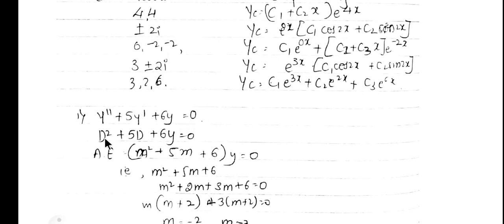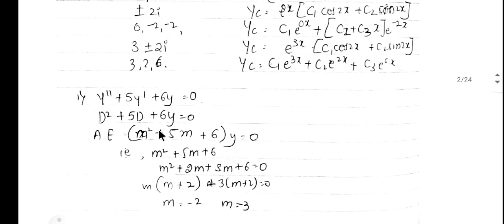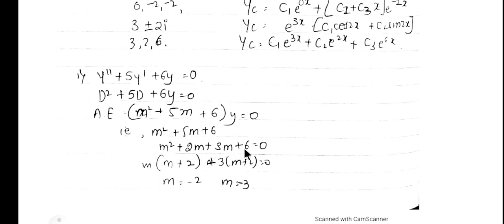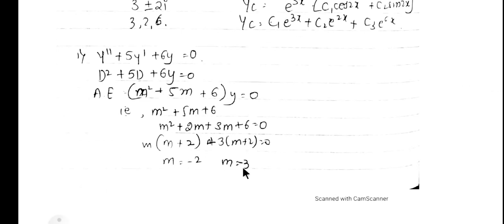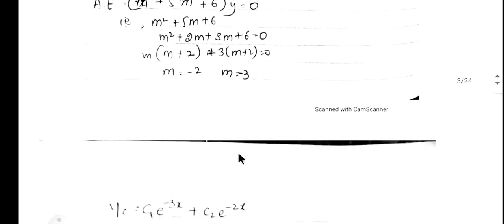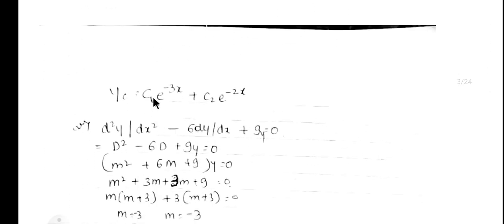Now we will solve examples. Example 1: y'' + 5y' + 6y = 0. Writing in operator form: (D² + 5D + 6)·y = 0. The auxiliary equation is m² + 5m + 6 = 0. Factorizing: m² + 2m + 3m + 6 = 0, giving m(m+2) + 3(m+2) = 0, so m = -2 and m = -3. The roots are real and distinct. Therefore the complementary solution is yc = c1·e^(-3x) + c2·e^(-2x).